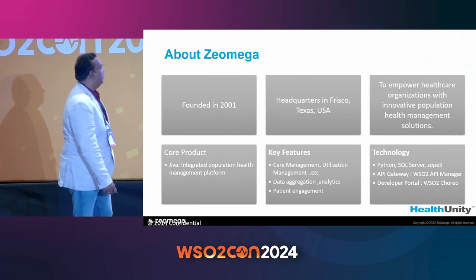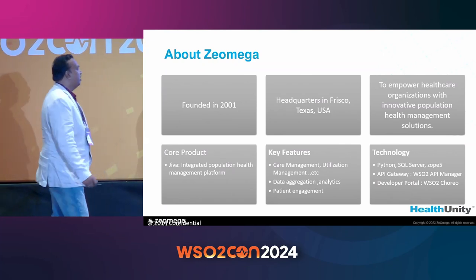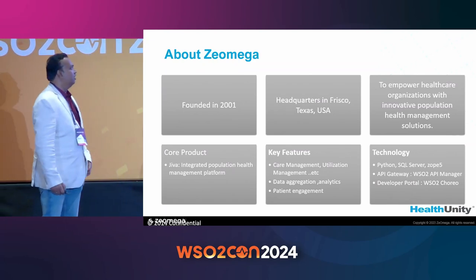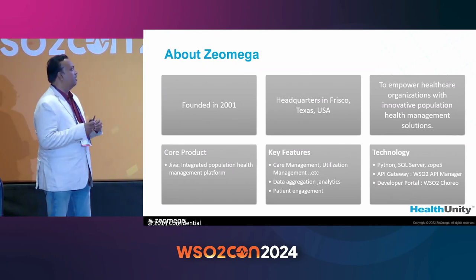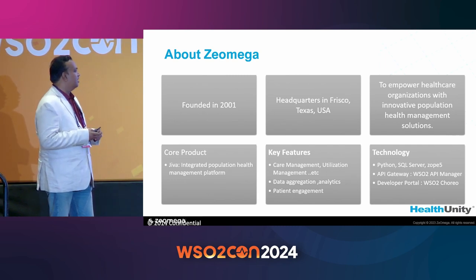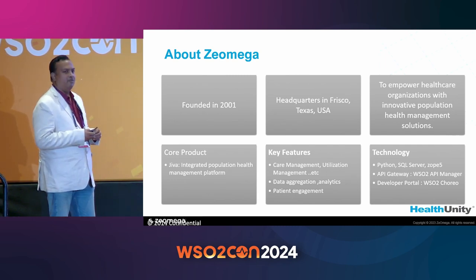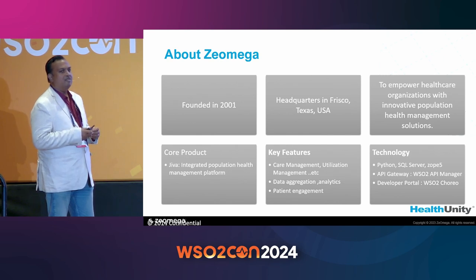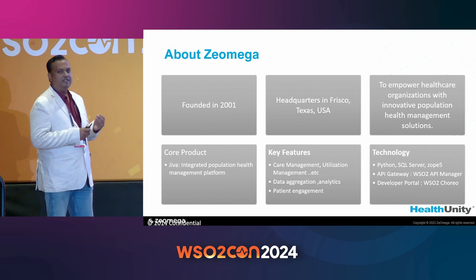About Z Omega: it was founded in 2001, headquartered in Frisco, Texas, USA. We have a platform called Jiva — a population health management platform. Population health management provides three things: better care, better health, and better cost.